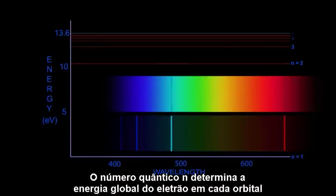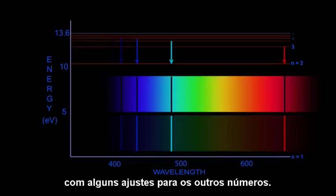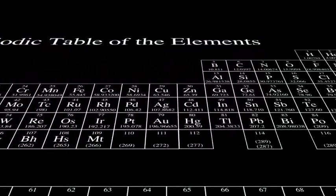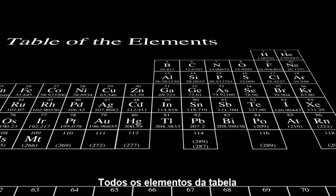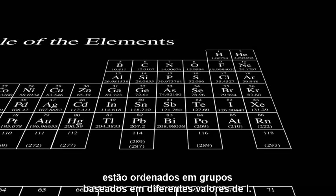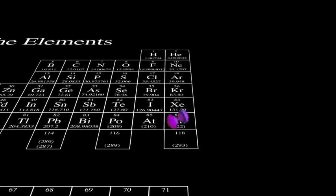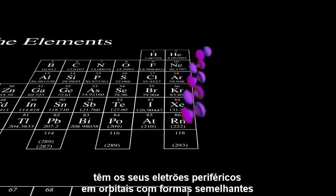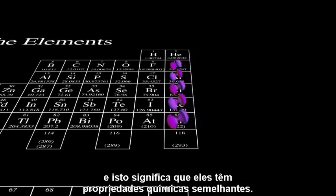The quantum number N determines the gross energy of the electron in each orbital, with some adjustments for the other numbers. And the quantum number L determines the shape of the orbital. All of the elements in the table are arranged into groups based on different values of L. Elements in a given column have their outer electrons in similarly shaped orbitals, and this means they have similar chemical properties.